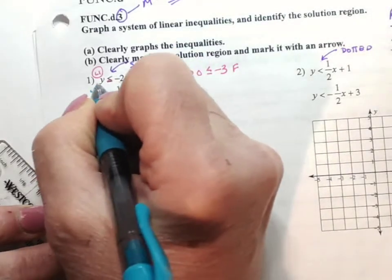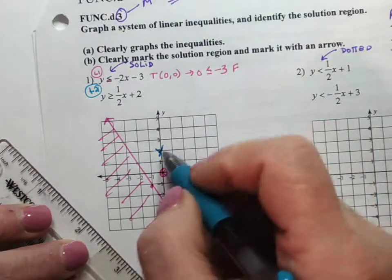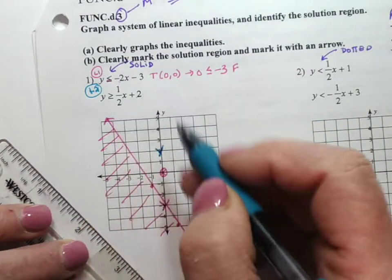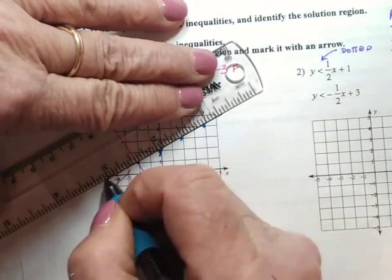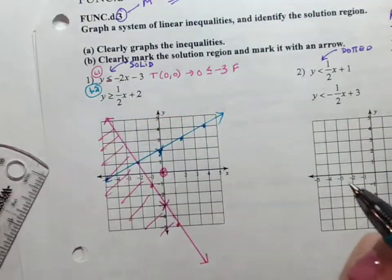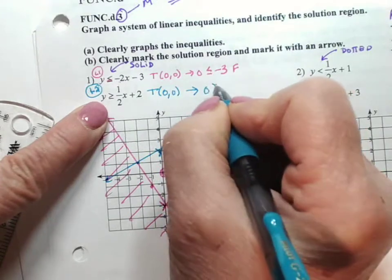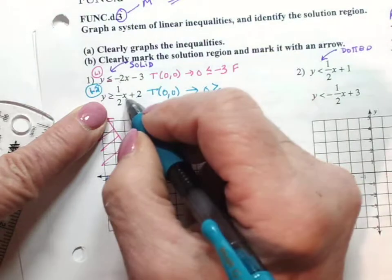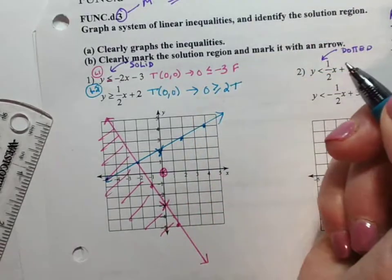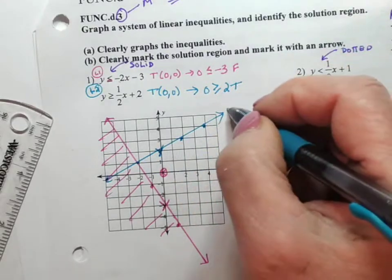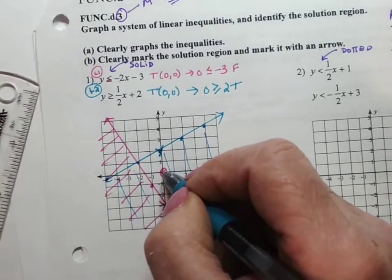Now I'm going to graph line 2. Here, the y-intercepts at 2. We go up 1. Well, the slope is 1 half. Up 1 over 2, up 1 over 2, back down 1, back 2. And we draw that line. Again, it's solid because of the equal sign. Again, we're going to test 0, 0. So y is 0, greater than or equal to, 1 half times 0 is 0, okay, plus 2. 0 is greater than or equal to 2. That is true. So that means for line 2, it's the bottom that's shaded, okay? 0, 0 is a solution here.